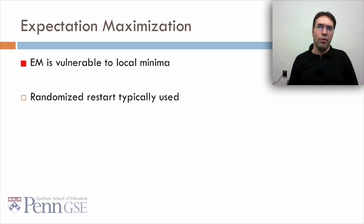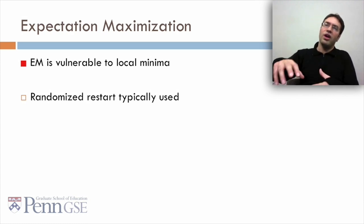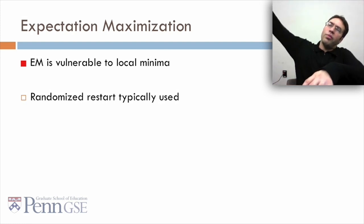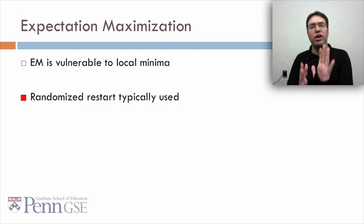EM is vulnerable to local minima, which means that sometimes you get to a parameter space where there's actually a much better one over somewhere else, but you can't get to it from where you are. And to try to avoid that, randomized restart is typically used.